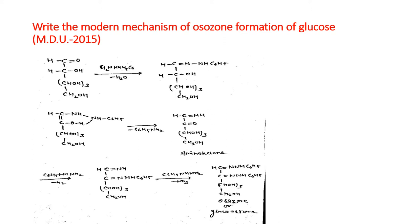The question here is: write the modern mechanism of osazone formation. This question has come from MDU 2015. So here, the first thing we will tell you is what reagent is used in this reaction.